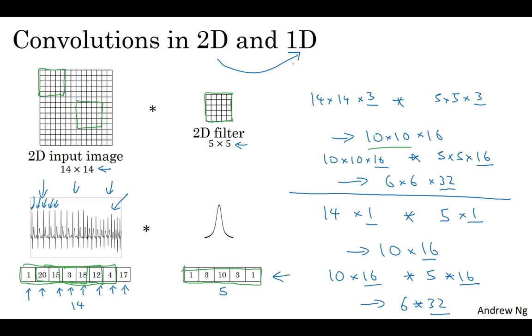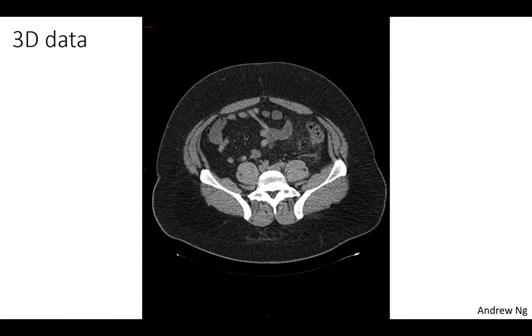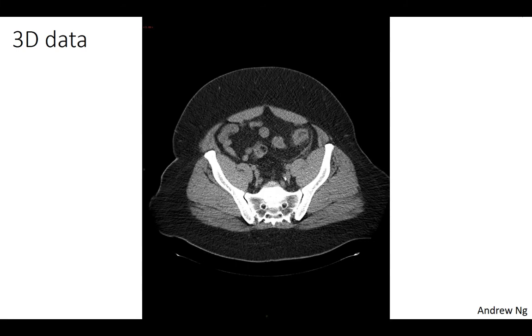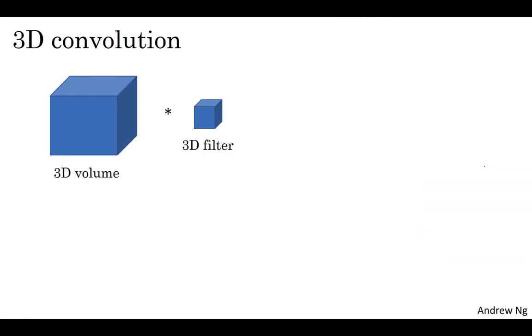What is three-dimensional data? Instead of having a 1D list of numbers or a 2D matrix of numbers, you now have a 3D block, a three-dimensional input volume of numbers. Here's an example of that, which is if you take a CT scan. This is a type of x-ray scan that gives a three-dimensional model of your body. What a CT scan does is it takes different slices through your body. As you scan through a CT scan, which I'm doing here, you can look at different slices of the human torso to see how they look. This data is fundamentally three-dimensional. One way to think of this data is if your data now has some height, some width, and then also some depth, where the different slices through this volume are the different slices through the torso. If you want to apply a ConvNet to detect features in this three-dimensional CT scan, then you can generalize the ideas to three-dimensional convolutions as well.